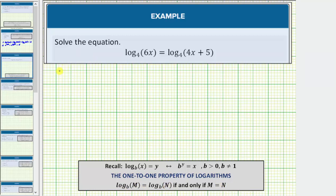In our case, we're given log base 4 of 6x equals log base 4 of the quantity 4x plus 5. Because these two logarithms are equal to each other and they're both base 4, it follows that 6x must equal the quantity 4x plus 5.